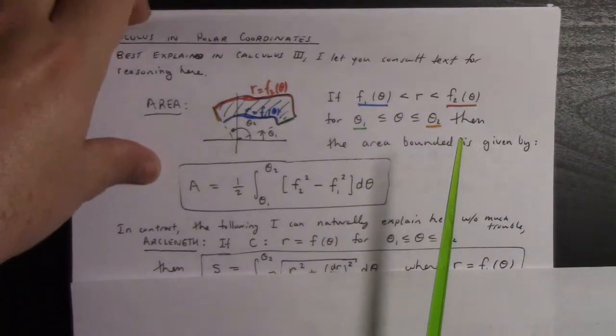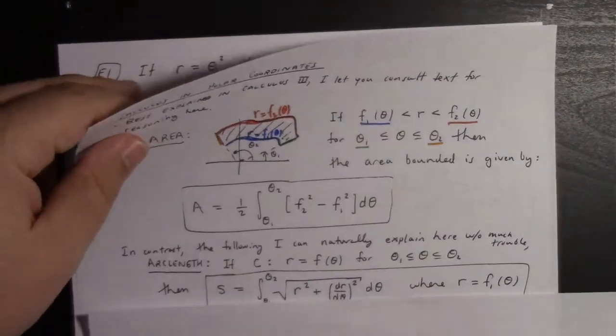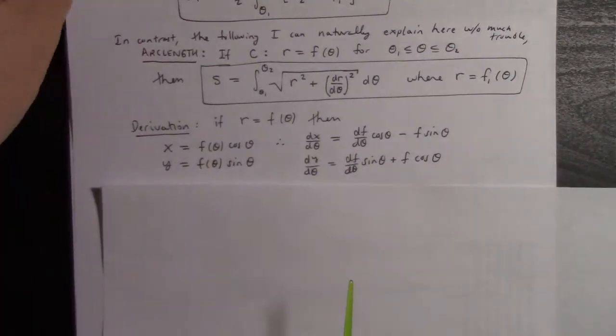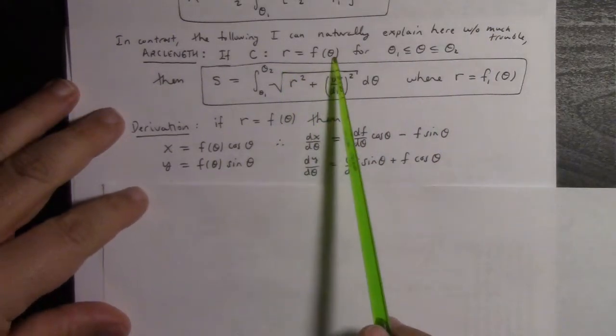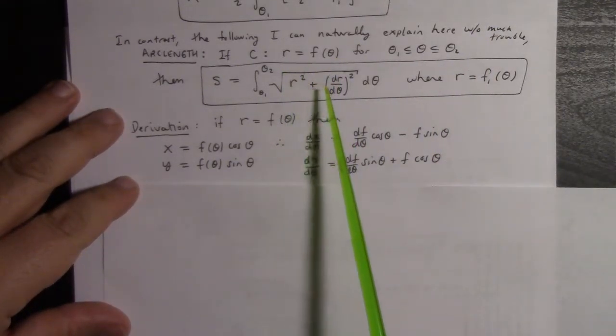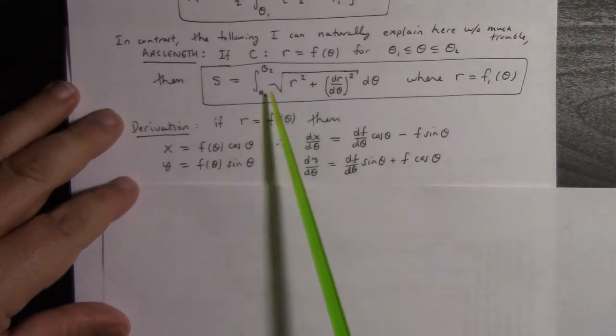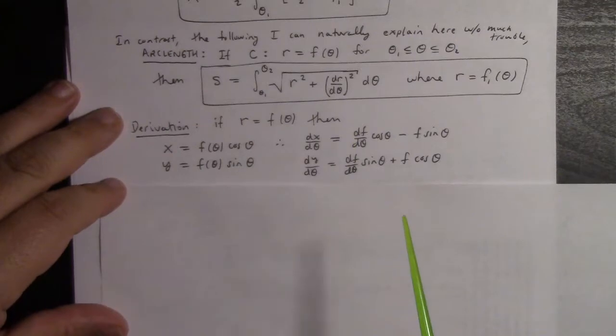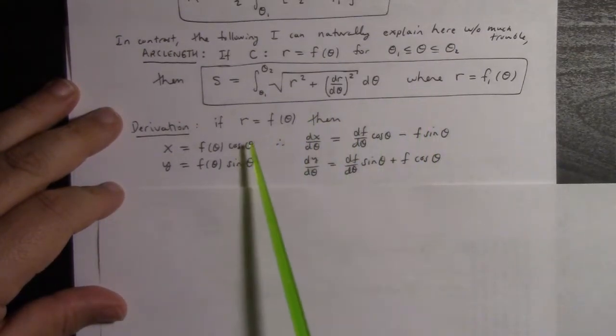Now, in contrast, I can do a better job explaining the arc length in polar coordinates formulas. If we have a polar graph r = f(θ), then the arc length is given by integrating √(r² + (dr/dθ)²) dθ over the range of θ. The derivation is pretty simple.